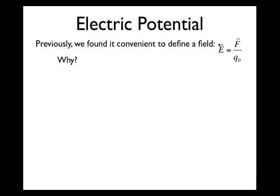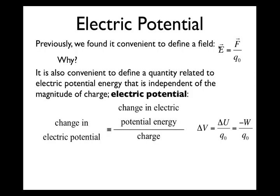The electric field is a constant property of a location in space, independent of how much charge is placed there. Whether that location is unoccupied or holds a one nano-coulomb or two nano-coulomb test charge, the field strength is the same. Similarly, in defining electric potential, we want a quantity related to electric potential energy that is independent of the magnitude of the actual charge at a given location — we'll call this electric potential.